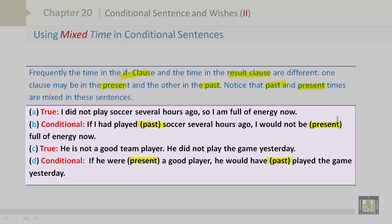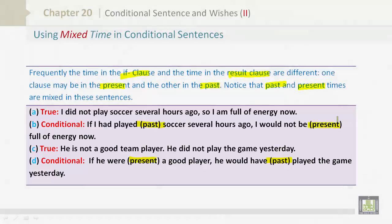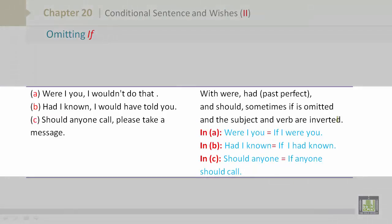Pause your screen and understand. Omitting if: In A, were I you, I wouldn't do that. With were, had, which is past perfect, and should, sometimes if is omitted and the subject and verb are inverted.